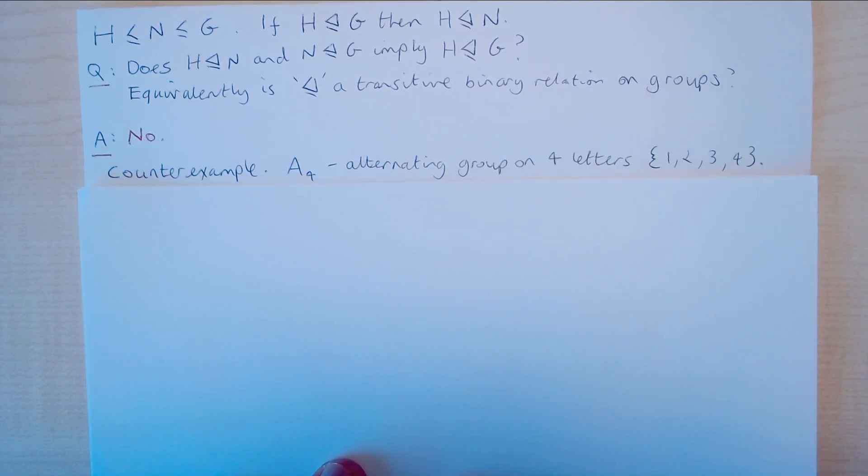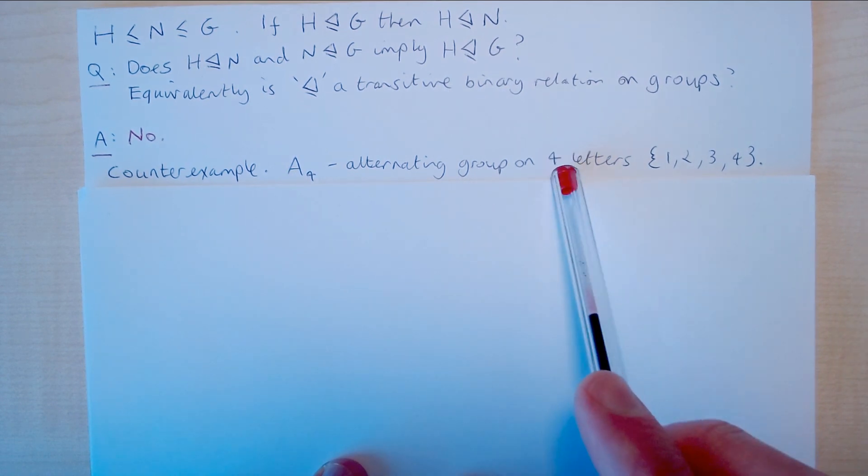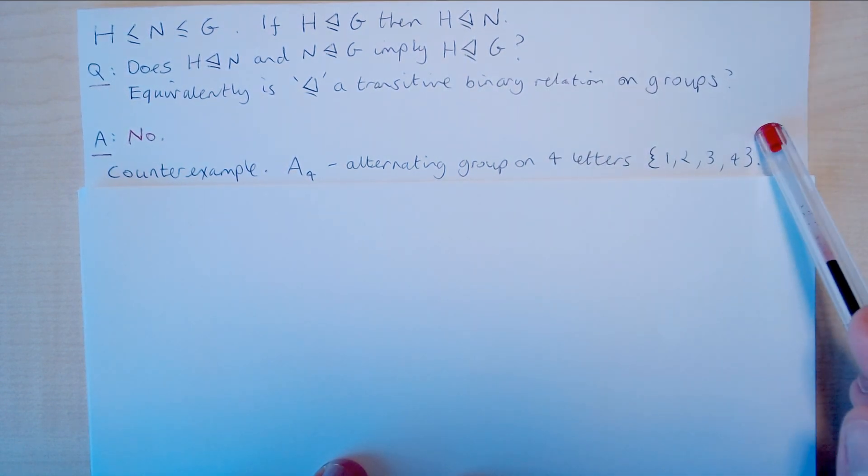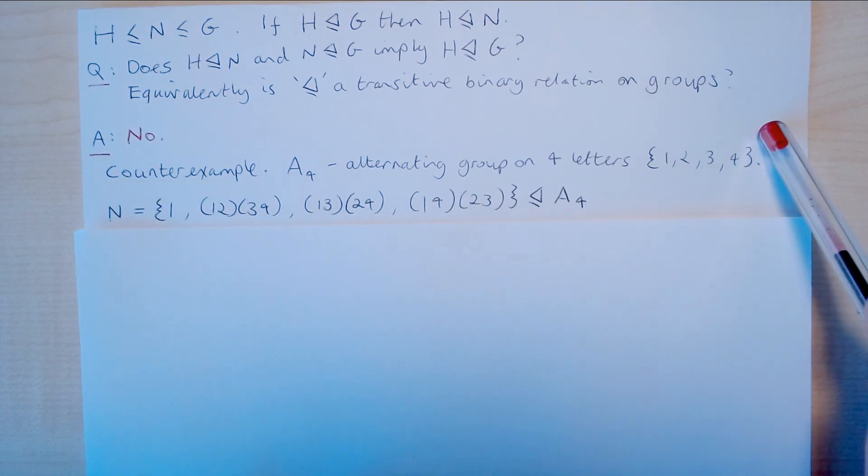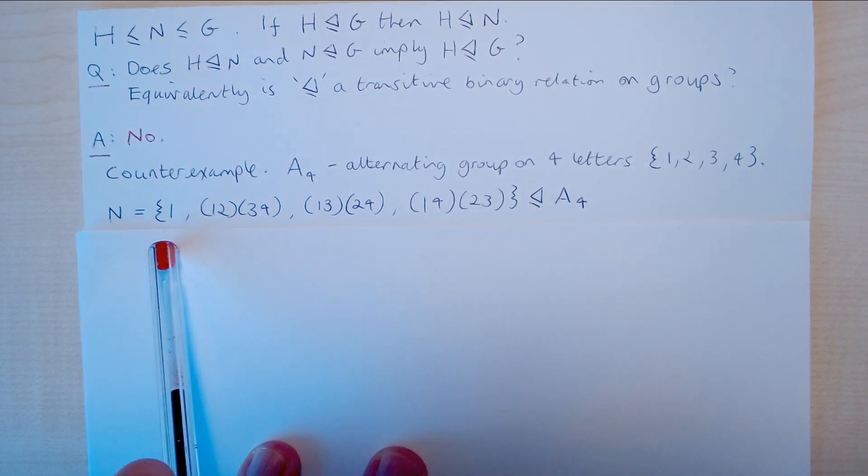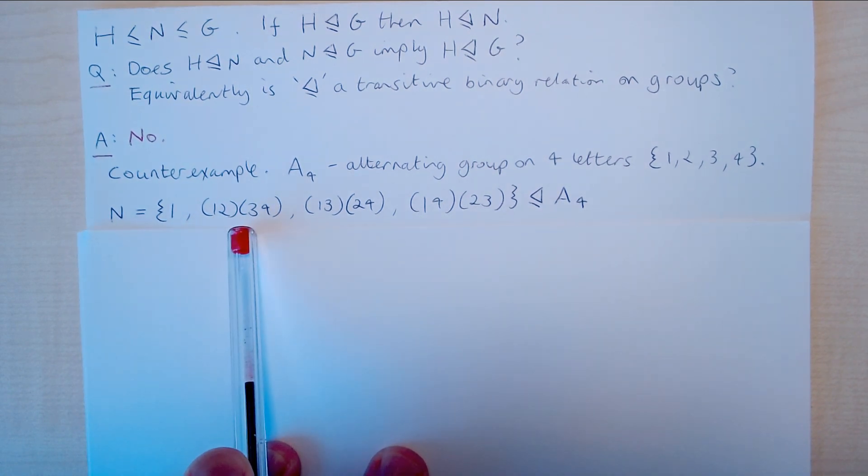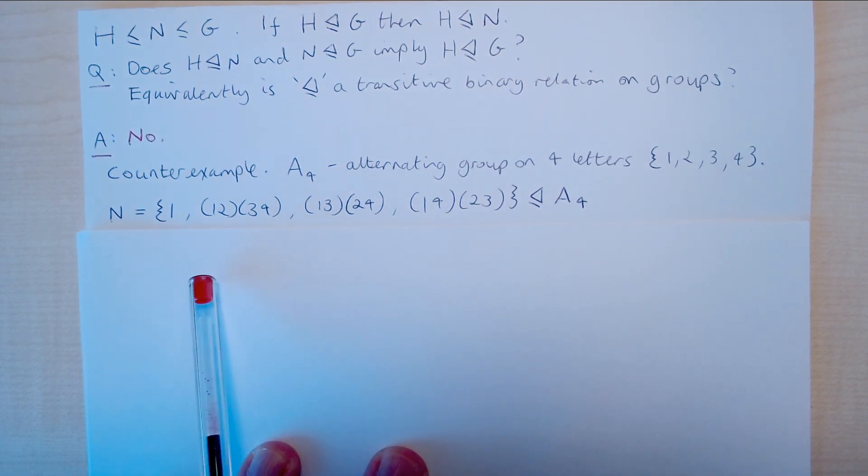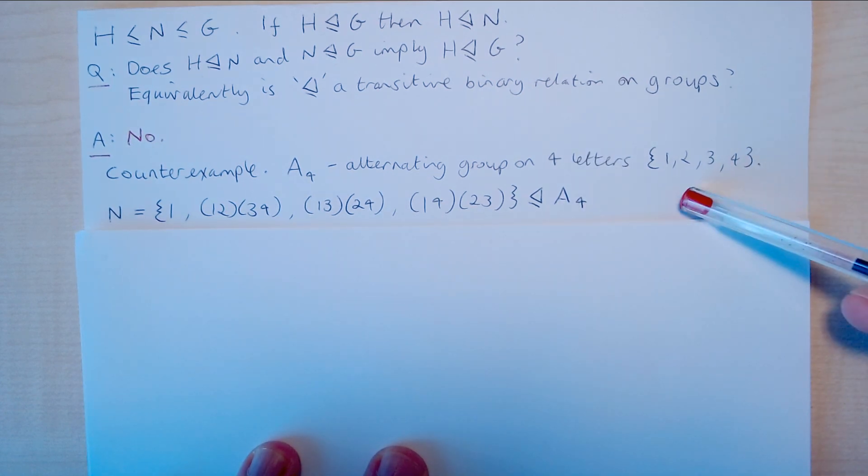So consider the group A4 which will denote the alternating group on the four letters 1, 2, 3 and 4. Then we have this subset N of A4 consisting of all of the elements whose cycle type consists of two transpositions.